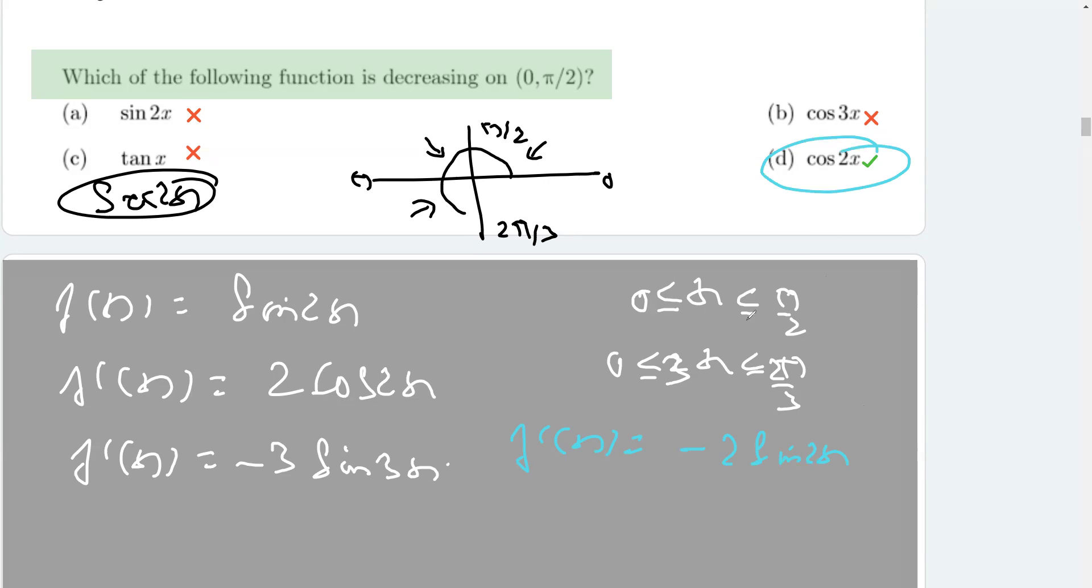Now, we know that sine, right? From x belonging to this. So, 2x belongs to 0 to π. That means we need to consider these two quadrants. The first and the second quadrant. In this case, the sine is positive. This sine is positive over here.